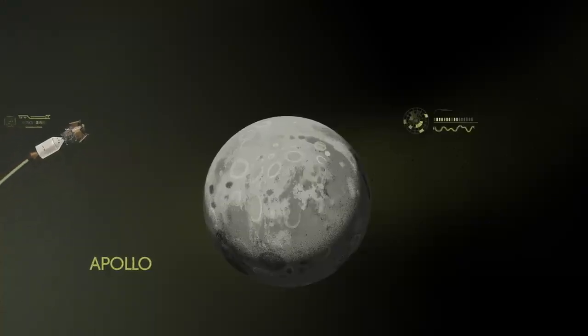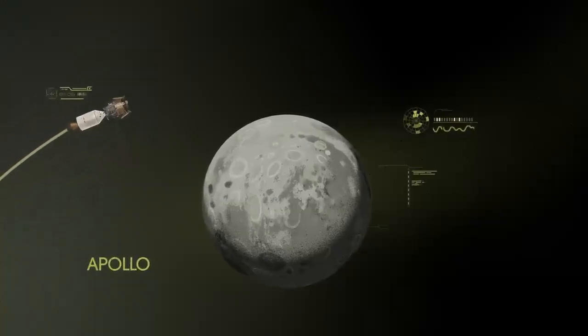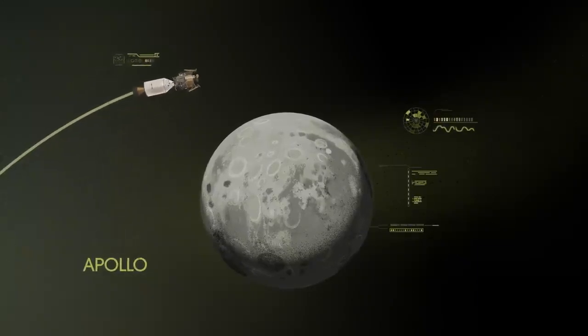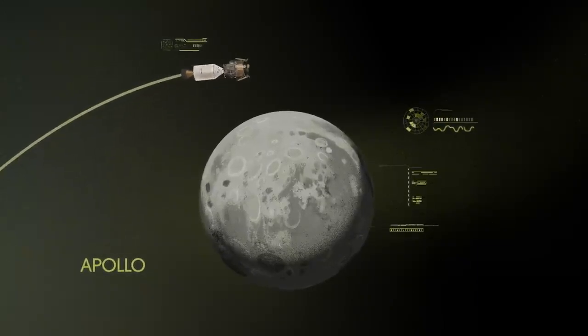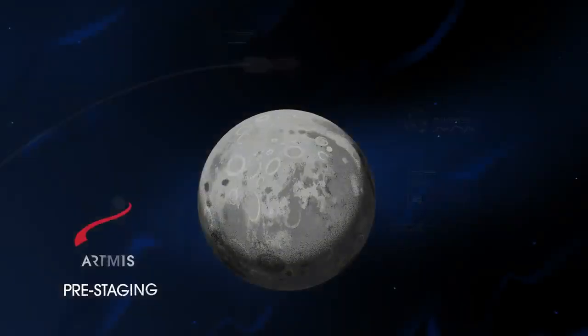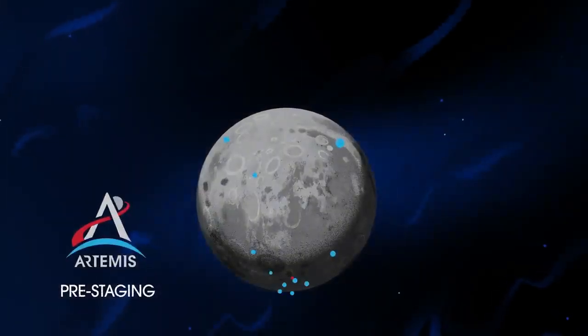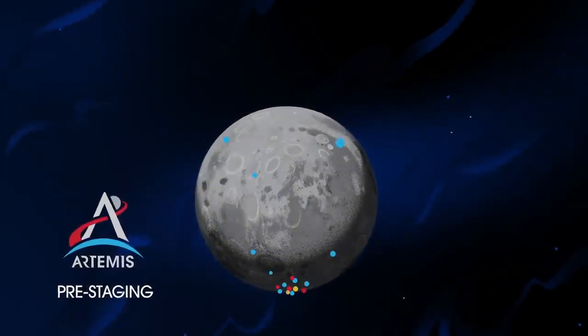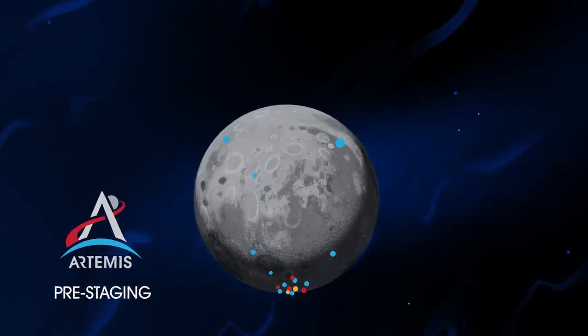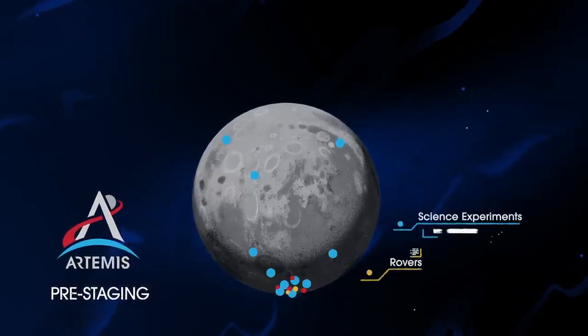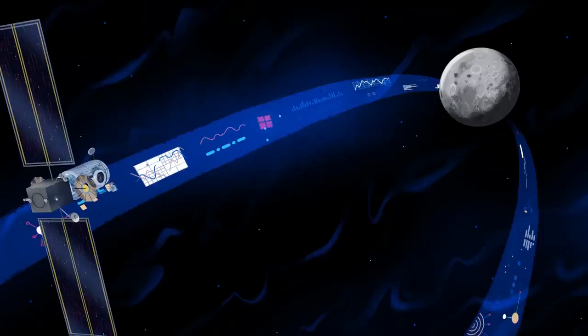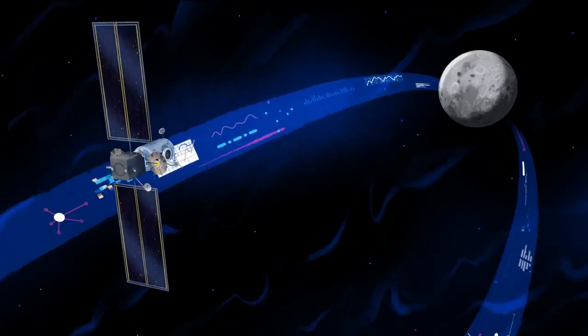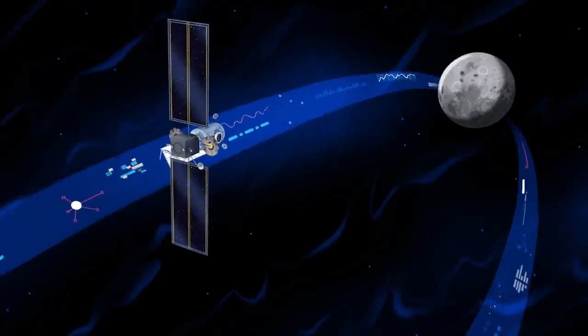Instead of requiring Orion to serve as an expendable lunar command module or to carry a constrained lunar lander, the Artemis missions will take advantage of a different approach: pre-staging. Everything needed for lunar missions will be positioned in advance by commercial and international partners. This includes rovers, science experiments, and human-rated systems on the surface. But it also includes a dedicated lunar station in orbit around the Moon called Gateway.